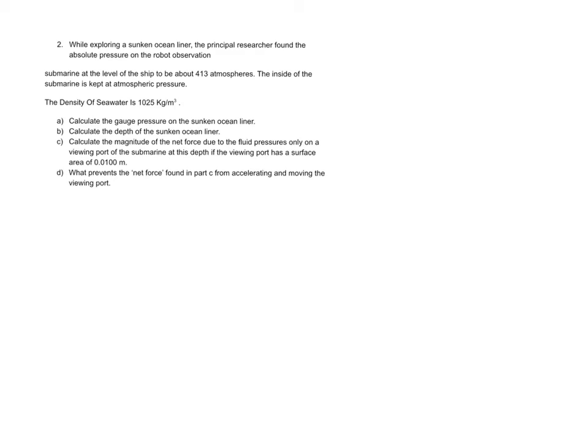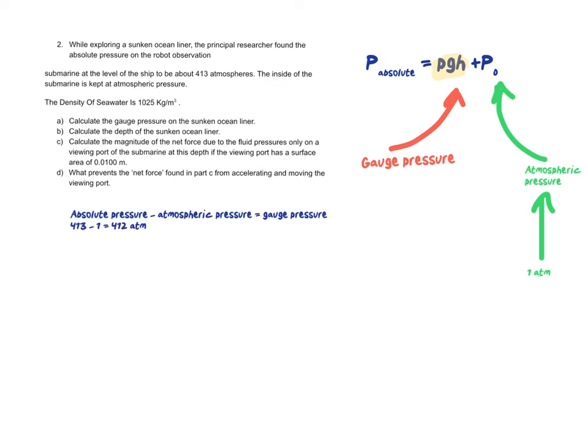So we know that from our previous videos, the absolute pressure includes the atmospheric pressure and this piece, which is the gauge pressure. So if we're just looking for the gauge pressure, we know that at sea level that's one atmosphere, and we can therefore just subtract out the one atmosphere, and we are left with 412 atmospheres for the gauge pressure. Part B says to calculate the depth of the sunken ocean liner.